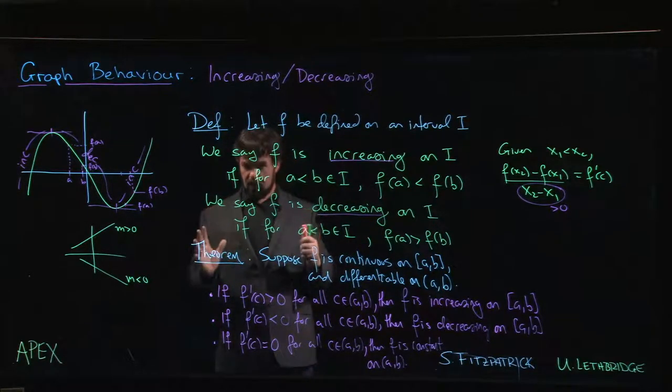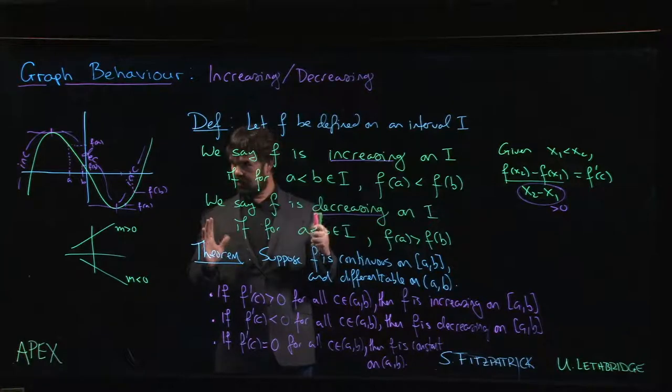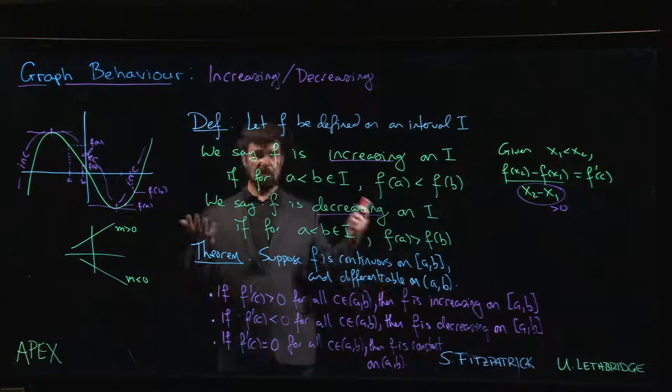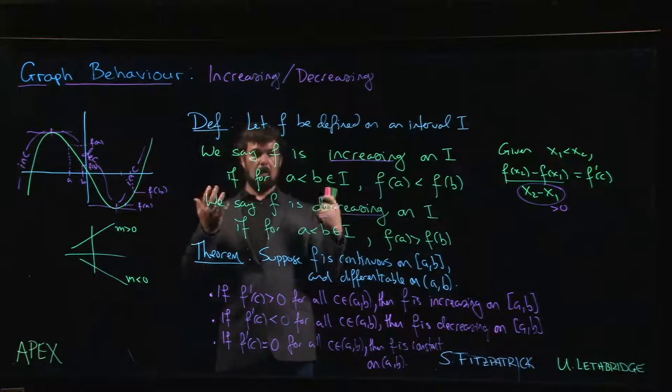But now that we have it, we can very quickly and easily figure out where a function is increasing, decreasing, or constant. We simply compute the derivative, we figure out where the derivative is positive, where is it negative, where is it zero.